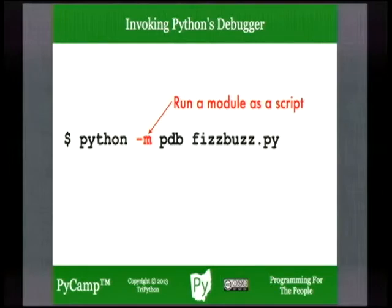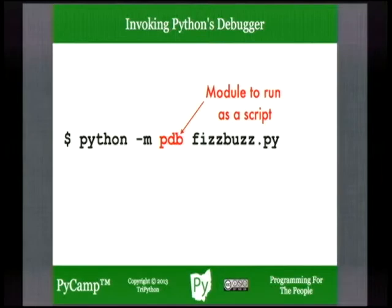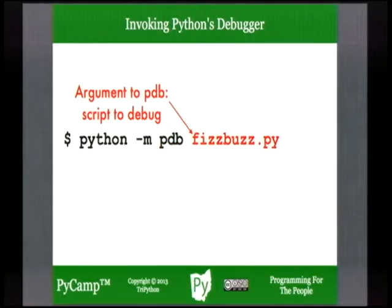At your operating system prompt — that's what the dollar sign stands for — you type 'python' in lowercase, then a space, then dash-m to say you'd like to run a module built into Python. All Pythons have a built-in PDB module — it comes with Python. Then you specify the name of the script you'd like to debug. We're going to debug fizzbuzz.py today. It doesn't even have to have a bug in it — you can step through any program one step at a time to learn about it.